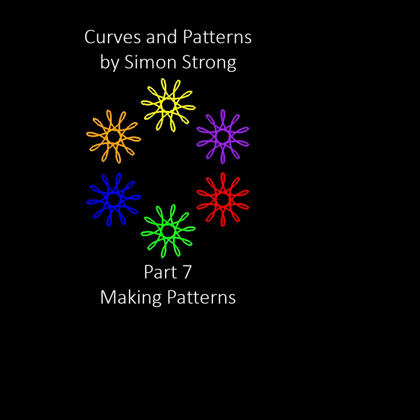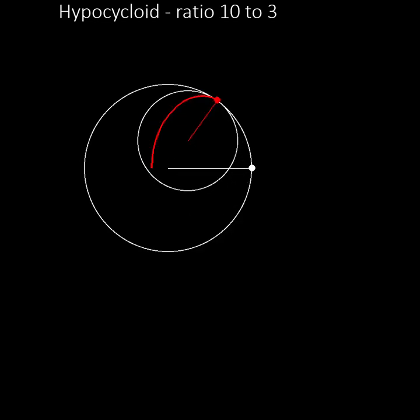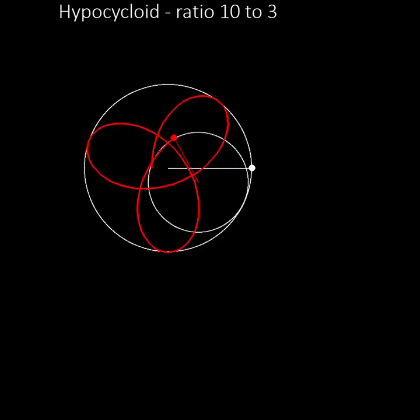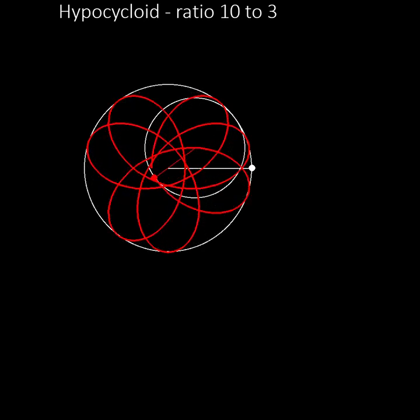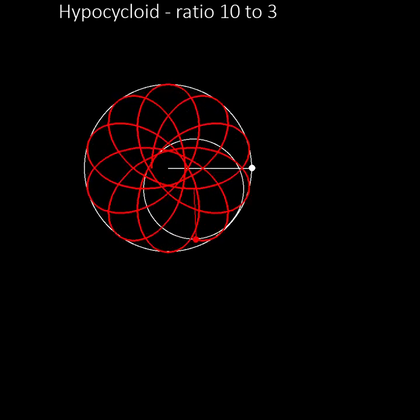Let's start with a single curve. This is a hypocycloid curve with a ratio of 10 to 3. Notice that it has 10 lobes, and the small circle rolls three times around the large circle to create the curve.